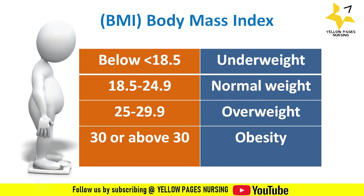Body mass index is a reliable indicator of body fatness for most people. It is used to screen for weight categories that may lead to health problems. If BMI is below 18.5, it indicates underweight. If it is between 18.5 to 24.9, it indicates normal weight. If it is between 25 to 29.9, it indicates overweight. If it is 30 or above, it indicates obese.